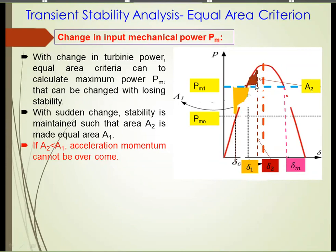We must adjust Area 2 so it becomes equal to Area 1 by changing the turbine power. Area 1 is defined by how much change in turbine mechanical power you apply from the initial point. If the initial point is in a certain region you can change more; if it's elsewhere you cannot change much. For this case, with the initial point where it is, we observe that Area 2 is less than Area 1, and the acceleration momentum cannot be overcome by the energy release during Area 2.